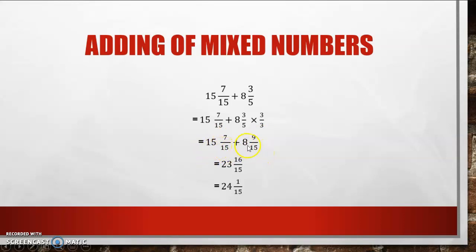15 plus 8 will give me 23, and 7 plus 9 is 16. We only add the numerators. 16 is bigger than 15, so once again I have an improper fraction. How many 15ths will be in 16? One. Then I add it to my 23, which will then become 24. And I have 1/15 left.